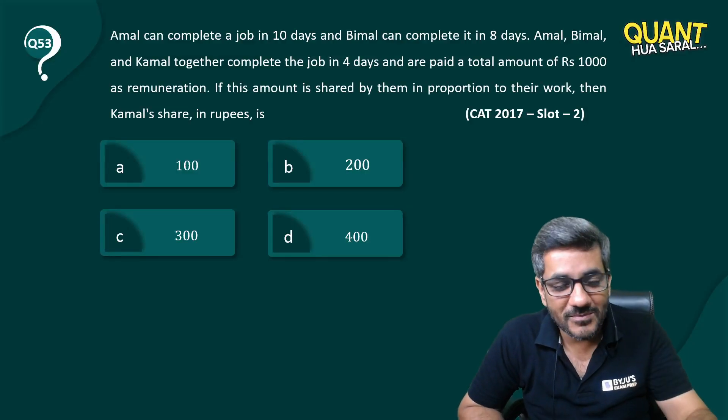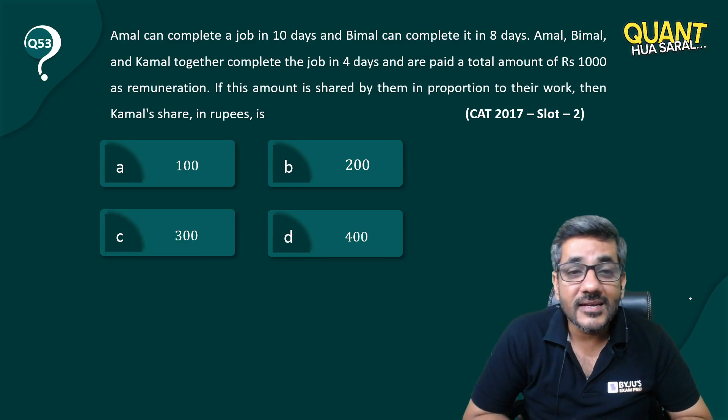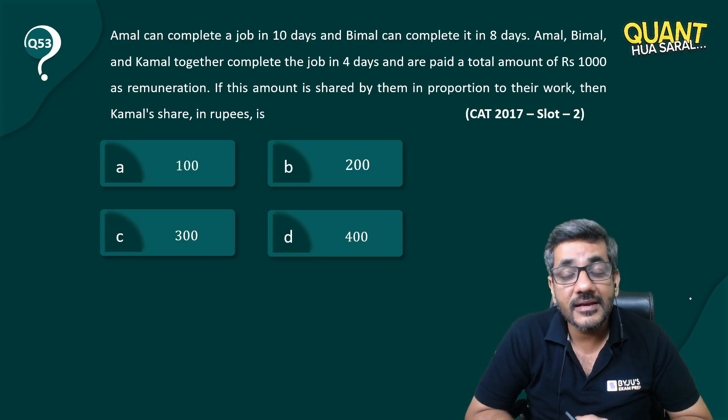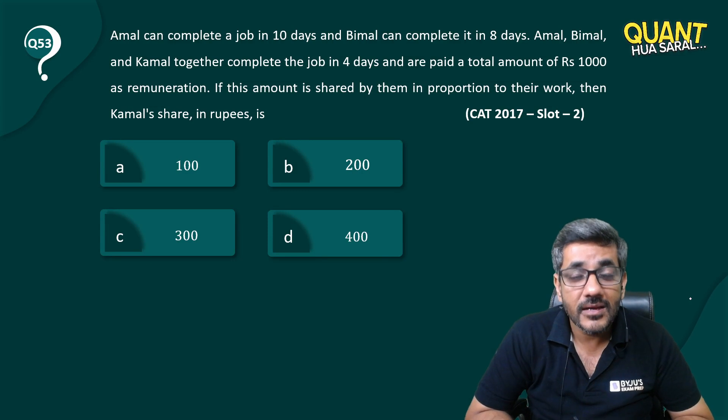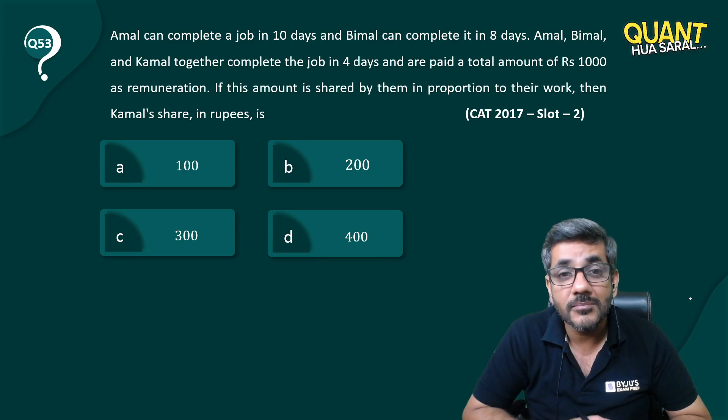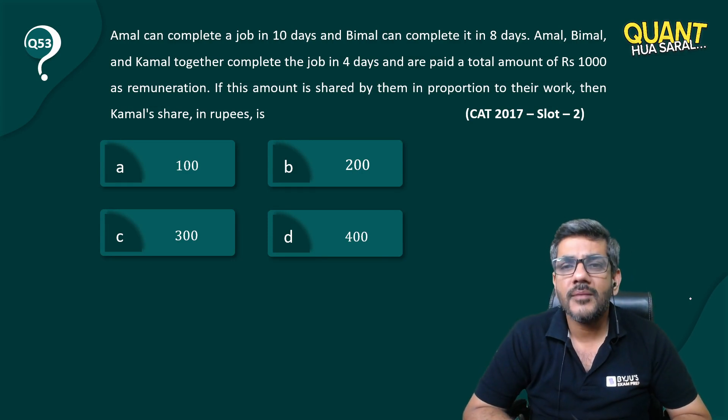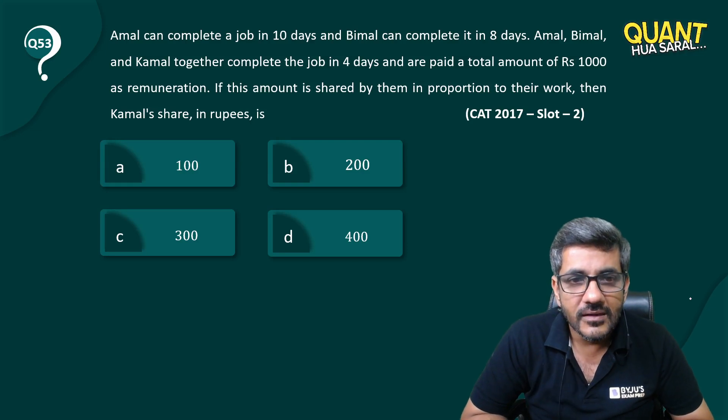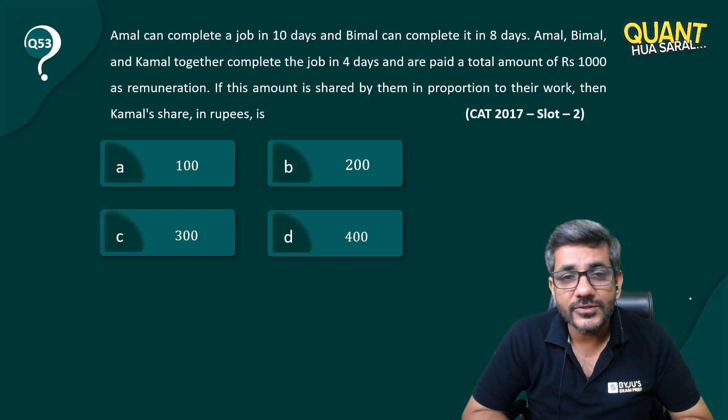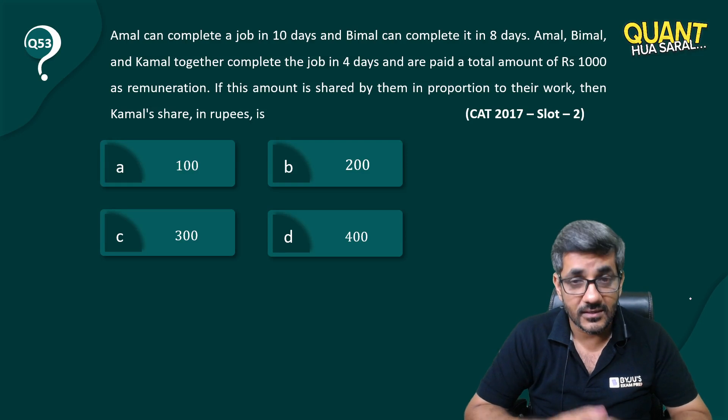Hey everyone, question number 53 today. Amal can complete a job in 10 days, Bimal can complete it in 8 days. Amal, Bimal, and Kamal together complete the job in 4 days and are paid a total amount of Rs 1000. If this amount is shared by them in proportion to their work, then what is Kamal's share? A question from CAT 2017, slot 2.